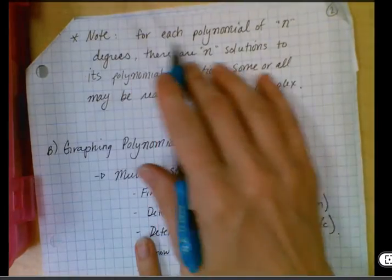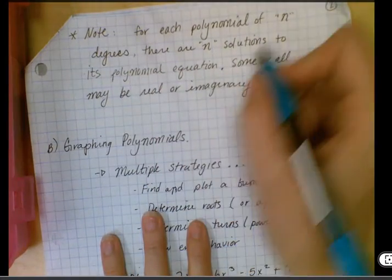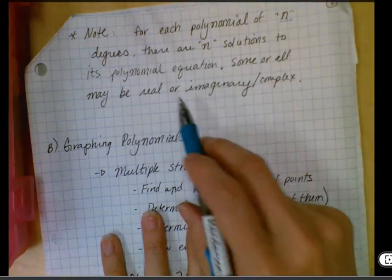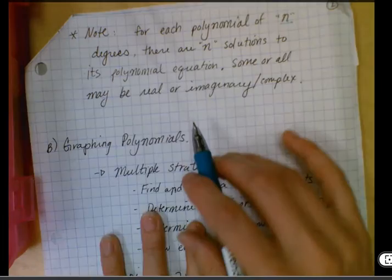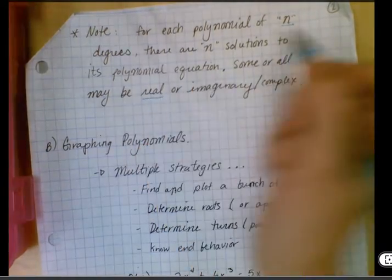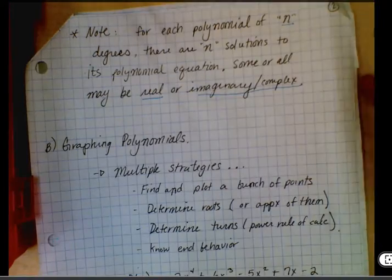We just have a little note here to remember. So if it has three degrees, there's three solutions to its polynomial equation. Four degrees is four, two is two, so on and so forth. It doesn't have to be real. They can be imaginary or complex.